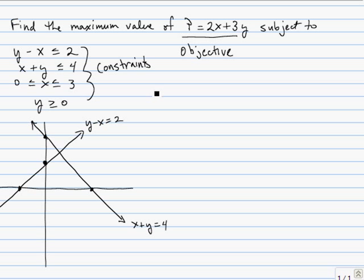The third constraint can be broken into two inequalities: x is greater than or equal to 0 and x is less than or equal to 3. x is greater than or equal to 0 is the vertical line that is the y axis, and the greater than or equal to 0 tells us we'll shade to the right. The line x equals 3 is right here, and we would shade to the left because x has to be less than or equal to 3. And finally, the last one y is greater than or equal to 0 is this horizontal line that is the x axis.